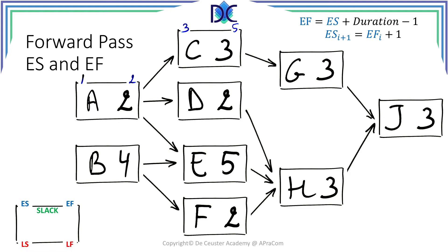We can do the same for activity D because we only have one predecessor A, so the early start of D is also equal to 3. We count two days for the duration of D. So 3 plus 2 minus 1 equals 4 and D will finish on April the fourth.